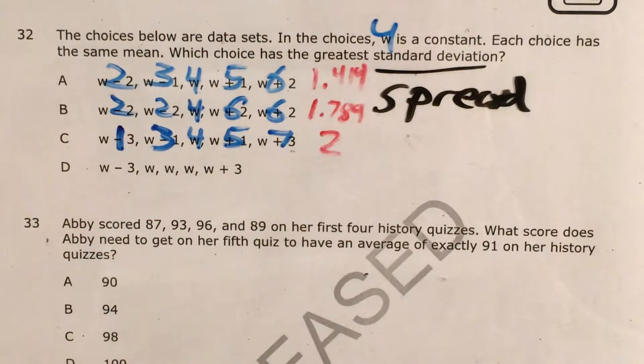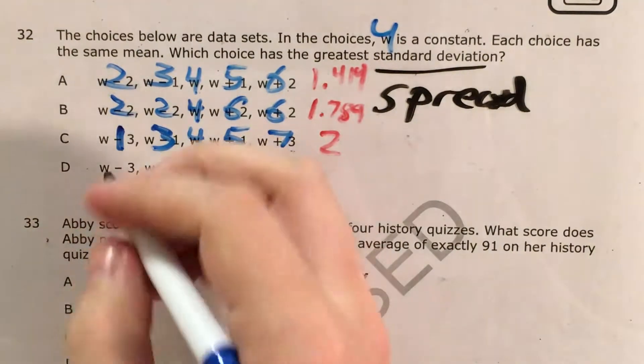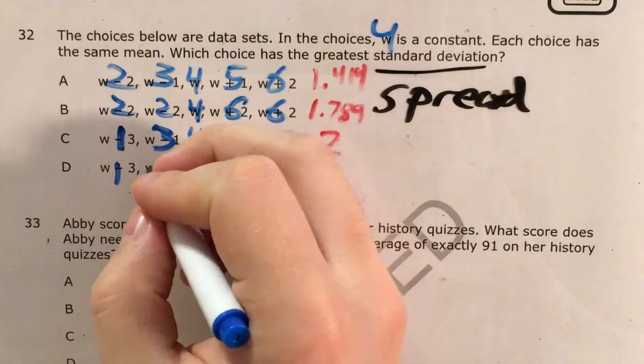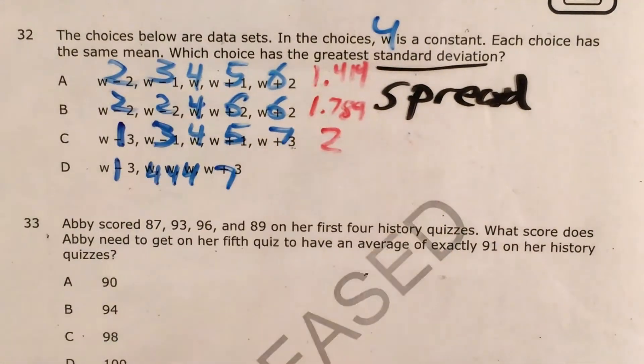All right, so now we test out choice D, where 4 minus 3 is 1, 4, 4, 4, 4, and 4 plus 3 is 7.